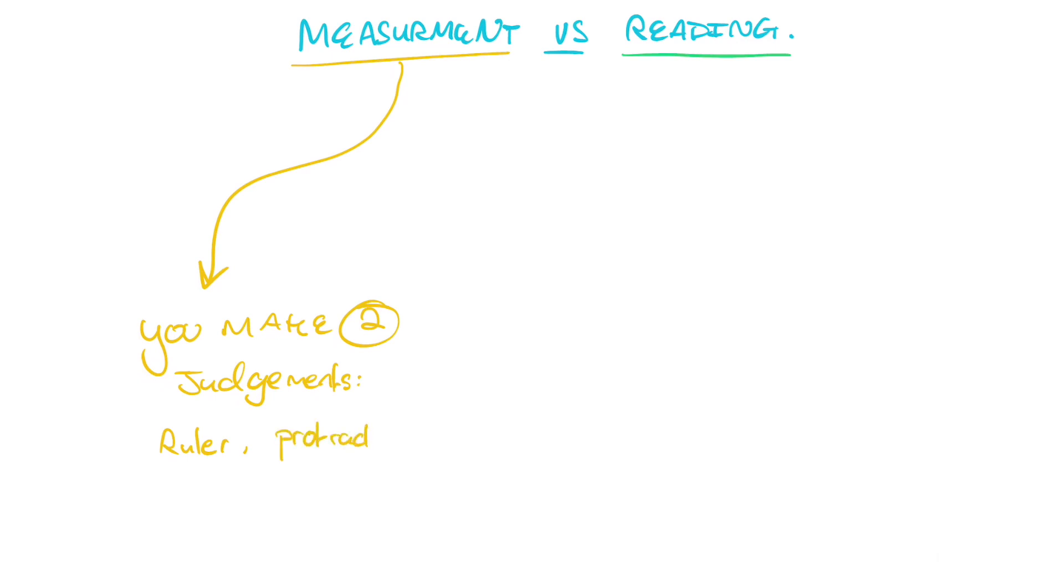A measurement, however, is two judgments. When you're using the ruler, you have to make a judgment on where to begin your measurement and where to end your measurement. You place the zero mark on a spot and you have to determine where the end point is yourself. Therefore, there's uncertainty in both of those judgments that you've made.